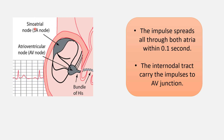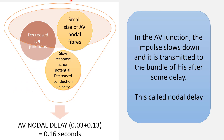The impulse in the heart spreads from the SA node through both atria within 0.1 second through the internodal tracts. From the SA node, after depolarizing the atrium, it comes to the AV node through the internodal tract, reaching the AV junction. After that, it goes to the bundle of His. Before the impulse reaches the bundle of His, at the level of the AV node, there is a slowing down, and it is transmitted to the bundle of His after some delay — this is the nodal delay.